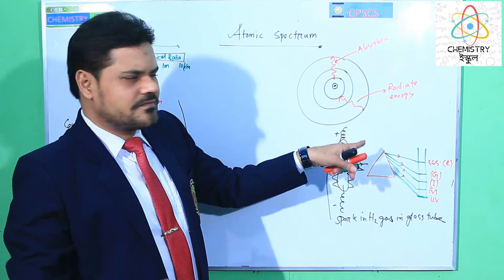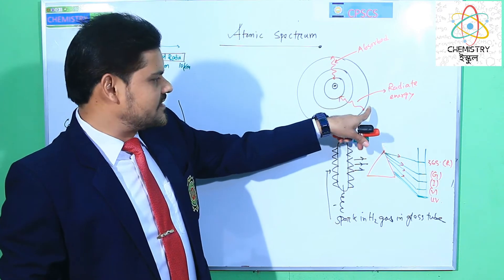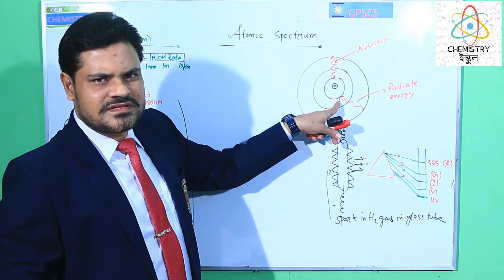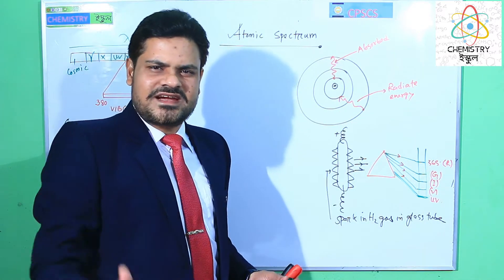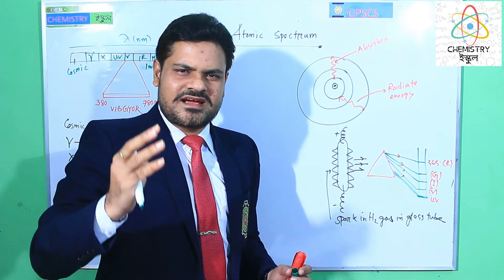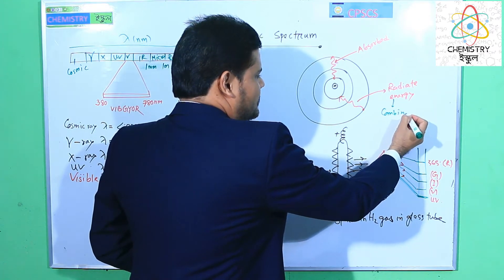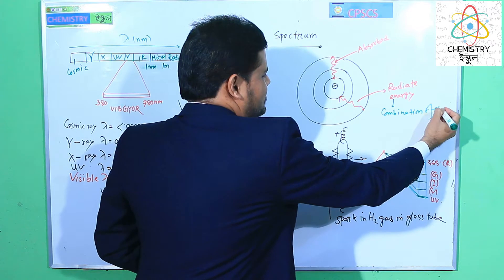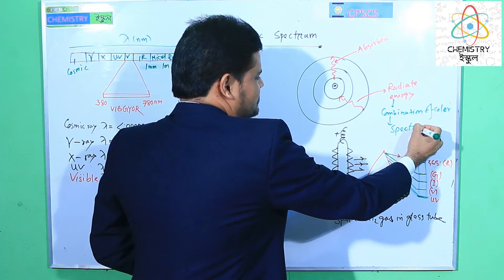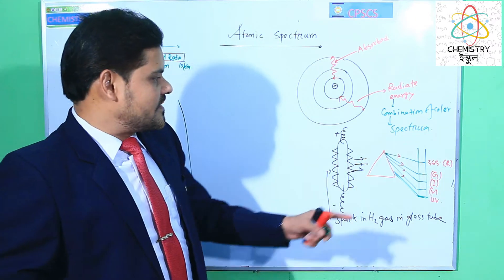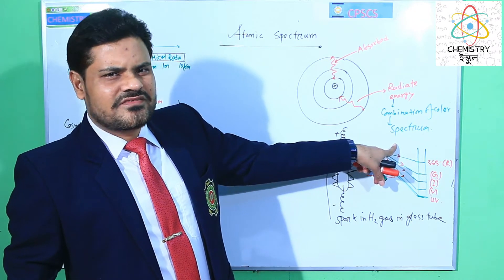And if that electron now falls to the lower energy level — from the third energy level to the first energy level — then this electron radiates energy. We know that when an electron radiates energy, this energy goes to the environment as a combination of color. This combination of color is the spectrum, and from an atom we can easily create the spectrum.